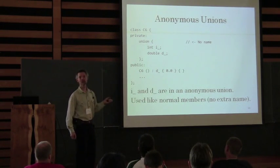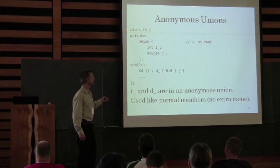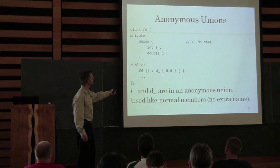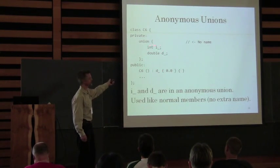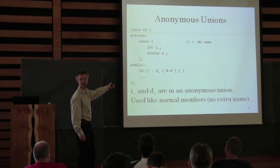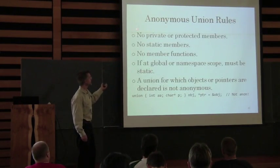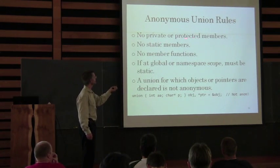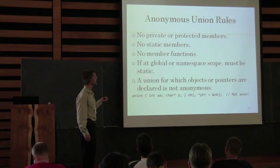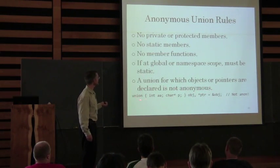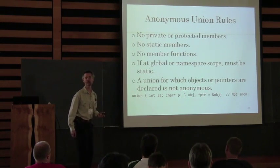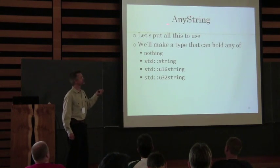There are anonymous unions — you don't have to name a union. You can declare a union without a name, and then access D without going through a named union variable. I and D are at the same address, but I can get into D directly. Anonymous unions are not as wide open as regular unions — no private or protected members, no statics, no member functions. If they are at global or namespace scope, they have to be static.